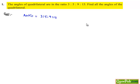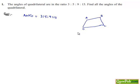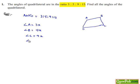So here let us assume a quadrilateral ABCD. Then angle A, angle B, angle C, and angle D will be the angles of the quadrilateral. Let us assume that angle A is equal to 3x according to the ratio, and angle B is equal to 5x. Angle C is equal to 9x and angle D is equal to 13x.